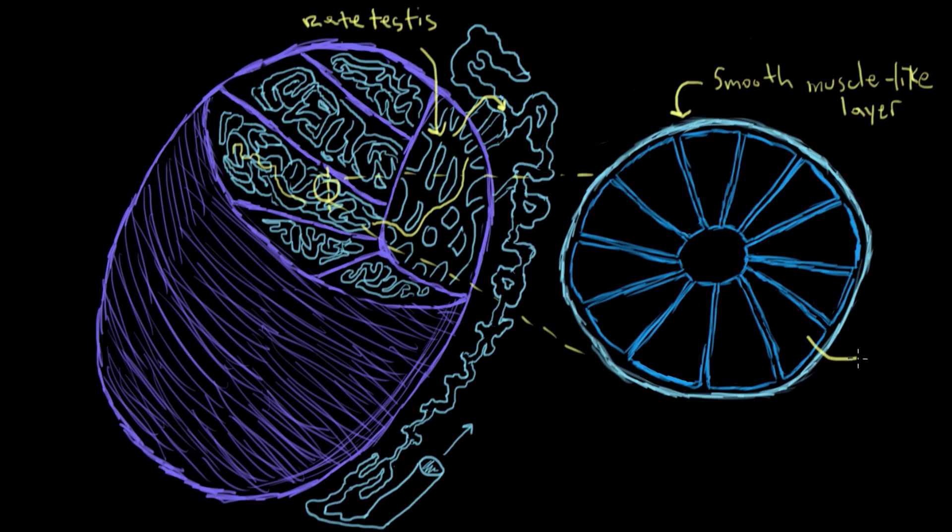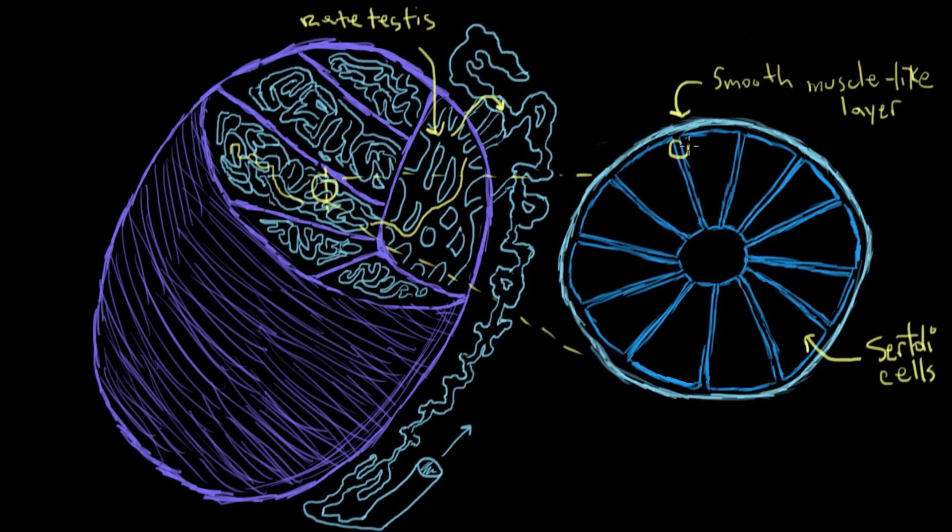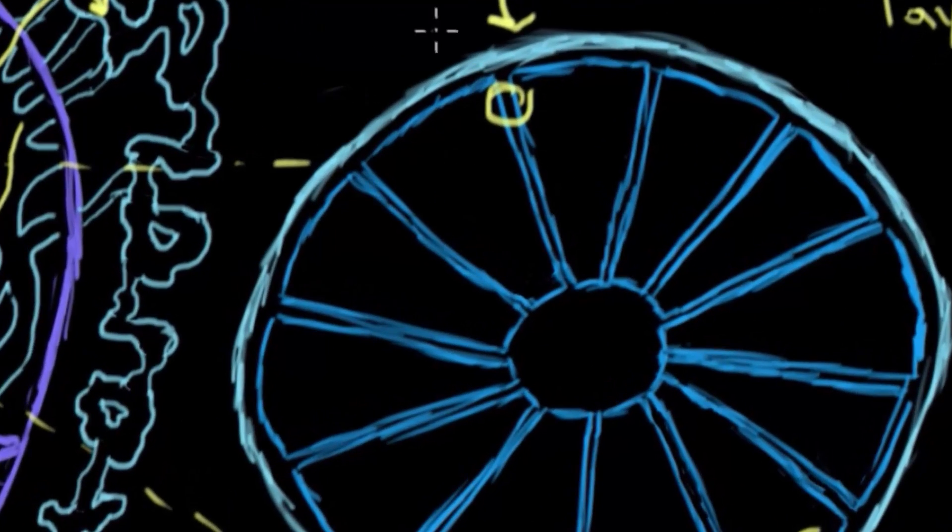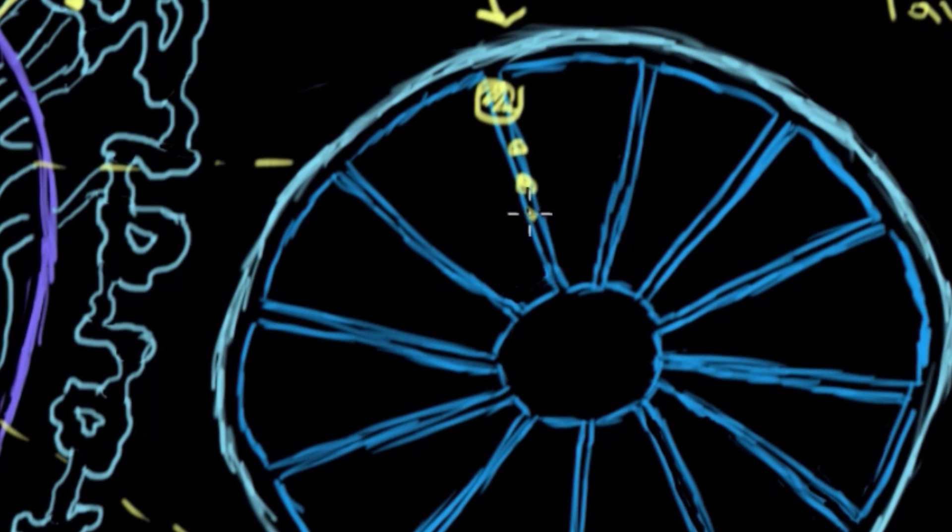These radially arranged cells in a bit darker blue, they're called Sertoli cells. In reality, Sertoli cells are packed into these tubules in a way more crowded fashion. This is just an easy, schematic way of looking at them and seeing how they do what they do. The general idea is that sperm develop between two Sertoli cells, and they develop as they shuffle down between the two cells toward the lumen here.